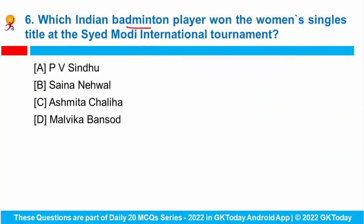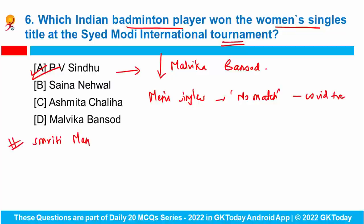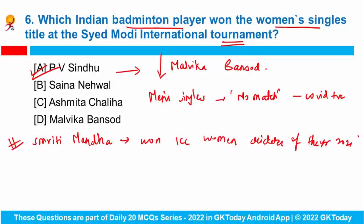Question number six: Indian badminton ace PV Sindhu won the women's singles title at the Syed Modi International Tournament, defeating Malvika Bansod. The men's singles final was declared as no match because one of the finalists tested COVID positive. In other sports news, Smriti Mandhana recently won the ICC Woman Cricketer of the Year 2021. She is the second woman player to win this award. LZ Perry from Australia was the first woman player to win this award.